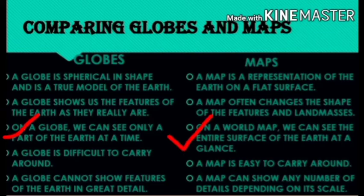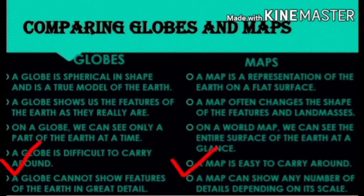On a globe we can see only a part of the earth at a time, but on a world map we can see the entire surface of the earth at a glance, because a map is a representation on a flat surface. Also, a globe is difficult to carry around as it is very big, but a map is easy to carry around — we can roll it up.